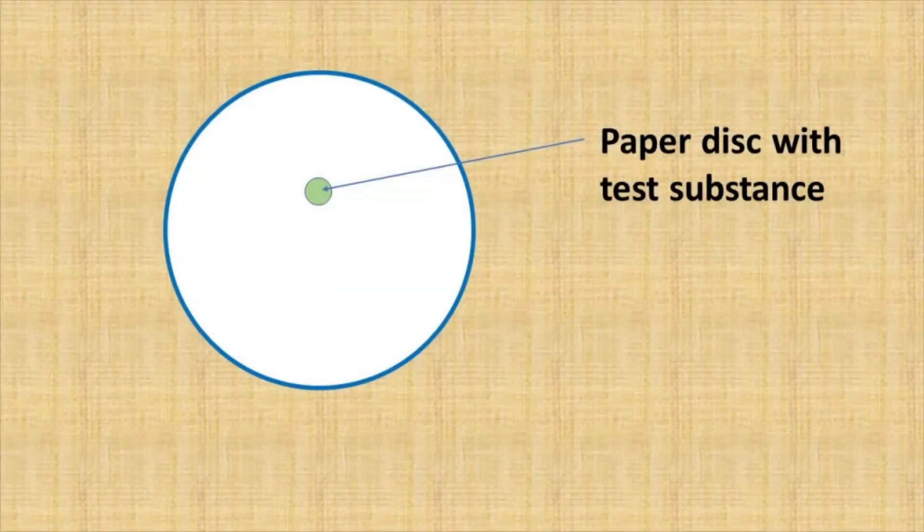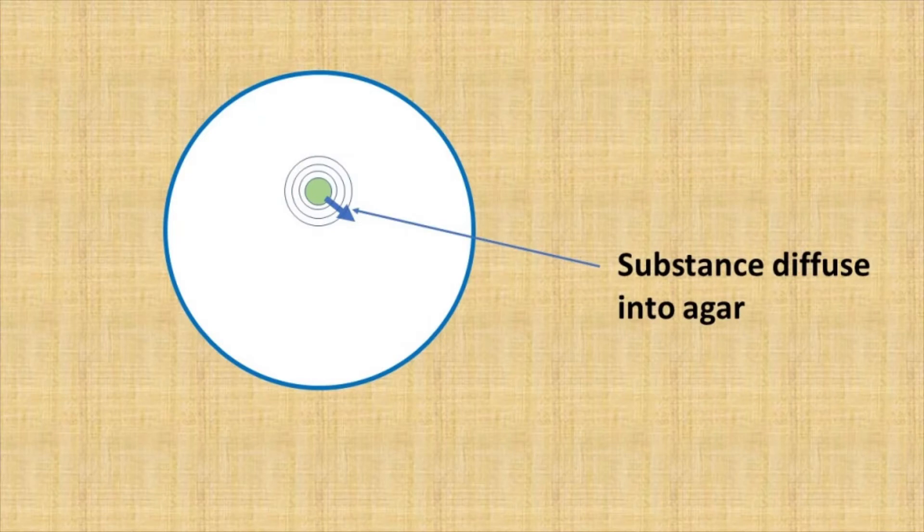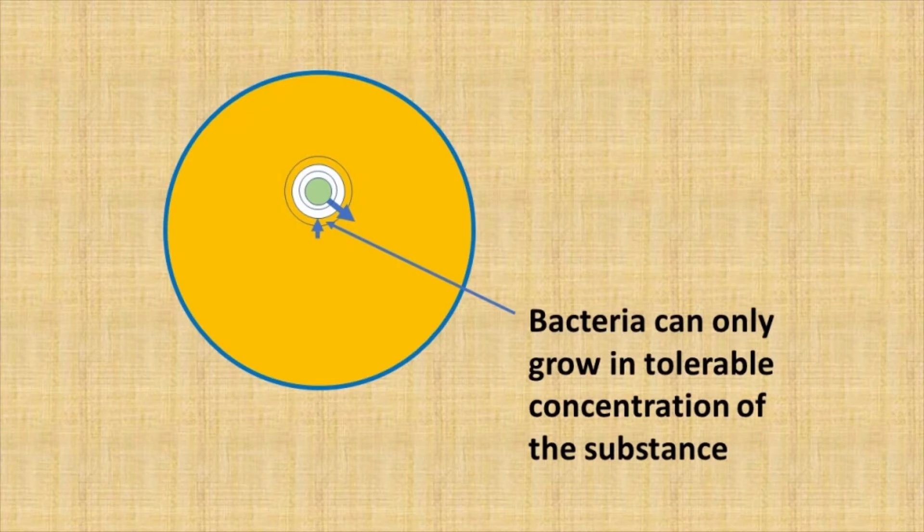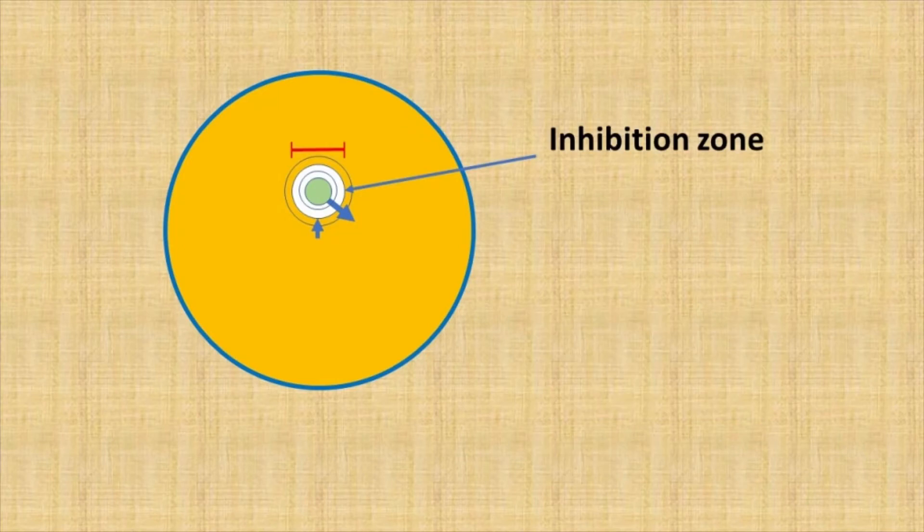While waiting for the bacteria to grow, let me quickly explain the method today. Now when we put a disk on the agar plate, whatever substance contained in that disk is going to diffuse into the surrounding agar. This will create a concentration gradient in the area where the closer to the disk, the concentration of the substance is higher. So in our case, if the substance we are testing has antimicrobial effect, bacteria will only grow in the area where the concentration of the substance is tolerable. In this way, the area near the disk will become a no growth zone. We call it the inhibition zone. And we can compare antimicrobial effect of different substances by measuring the diameter of this zone.